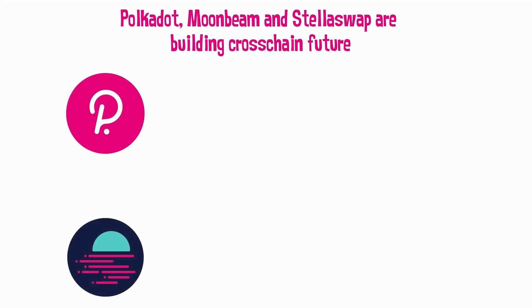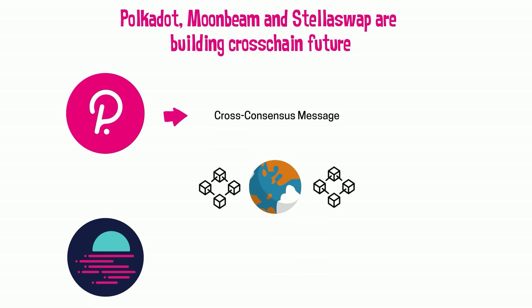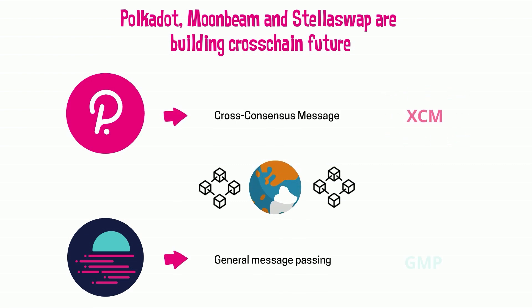Polkadot and Moonbeam allow us to build a true, connected world of blockchain. This is based on two protocols: Cross-Consensus Message (XCM) and General Message Parsing (GMP).